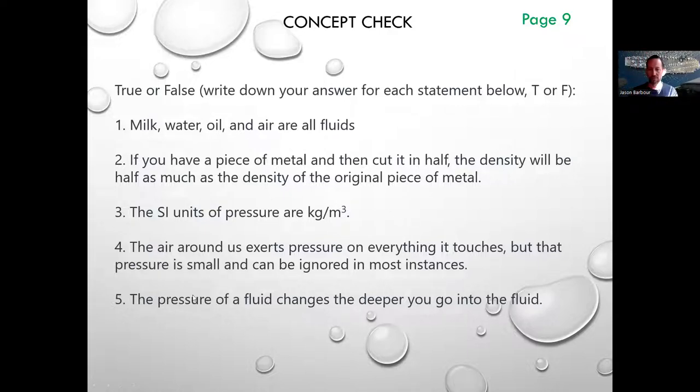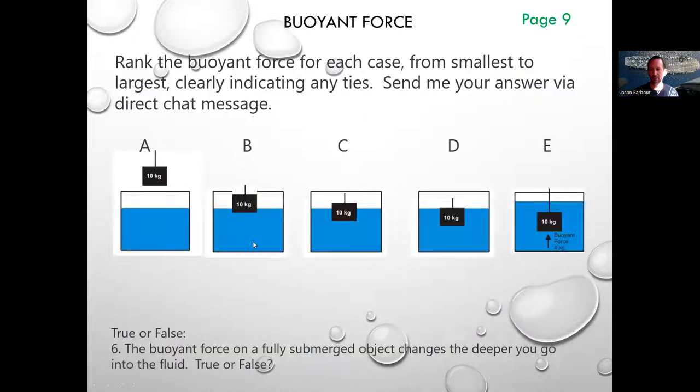Number five, pressure of a fluid changes the deeper you go into the fluid. Just when you thought they were all going to be false, this one is true. P2 equals P1 plus rho GH. Don't have to memorize it. You just have to see it on your equation sheet and understand what it means. Remember, P1 will often be the atmospheric pressure if you're finding the pressure at a certain depth of fluid, like in a lake or a pool or an ocean or something.